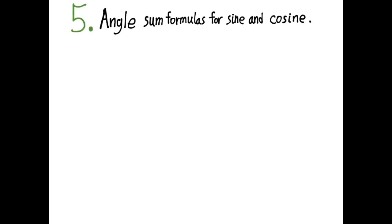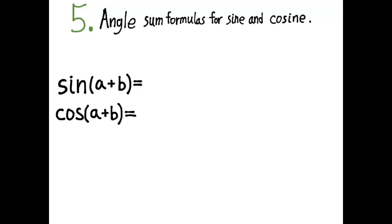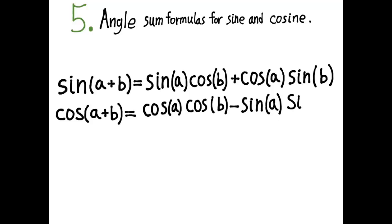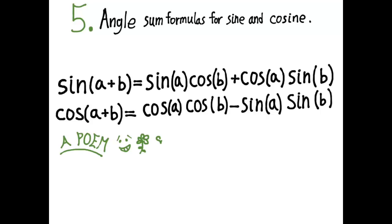Number five: the angle sum formulas for sine and cosine — specifically the formula for sin(a + b) and cos(a + b). I'm not asking you to memorize the formula for tan(a + b). Sine of (a + b) is sin a cos b + cos a sin b. Cosine of (a + b) is cos a cos b − sin a sin b. A student once taught me a poem to help remember this.